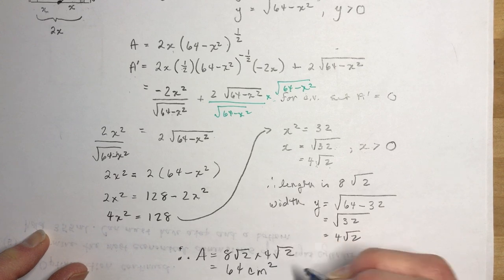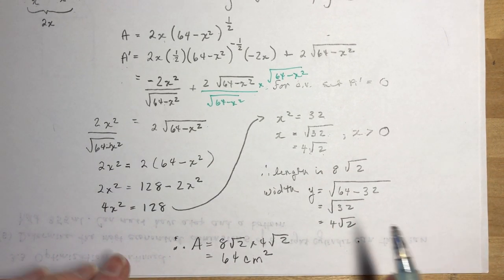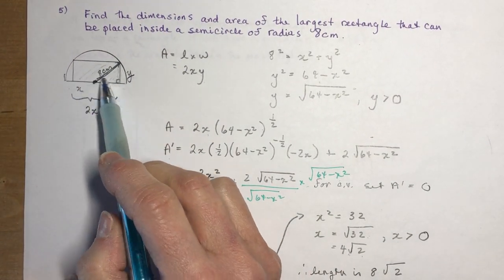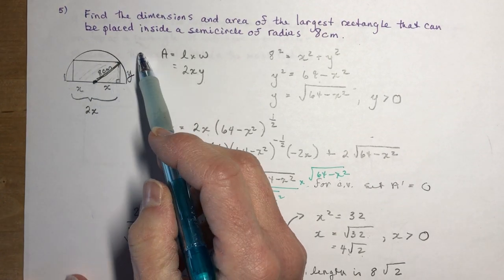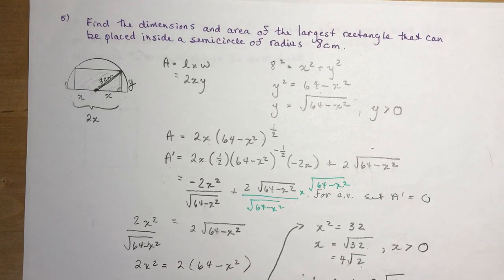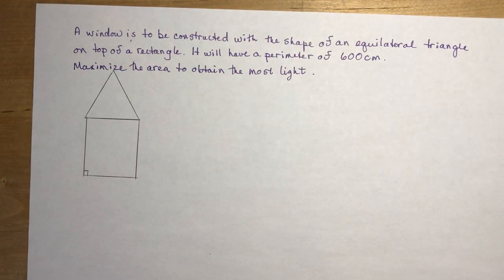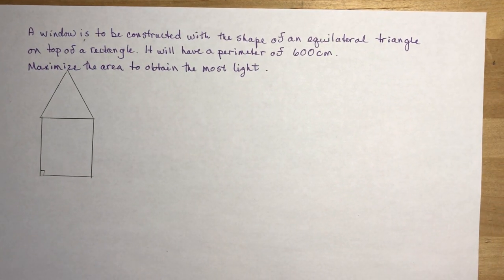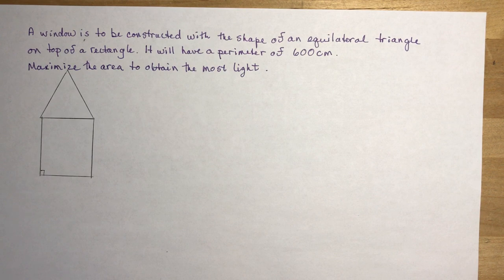That's a tricky one! Once you've seen how to set it up, you can find the largest rectangle inside any semicircle of any radius. Now let's get to the last problem, which is a little tricky. It says: a window is to be constructed in the shape of an equilateral triangle on top of a rectangle, with a perimeter of 600 centimeters. Maximize the area to obtain the most light.